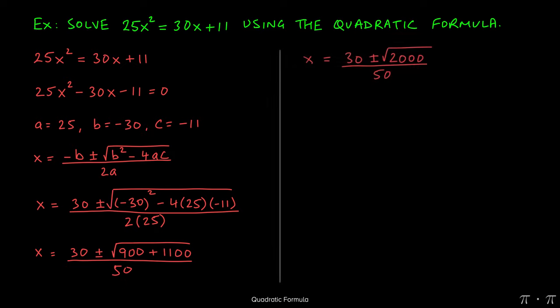We can simplify the inside of the radical, 900 plus 1100, to get 2000 inside the radical.